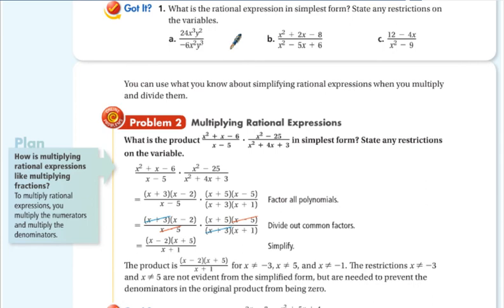Alright. A simplified is negative 4x over y. x can't be 0 and neither can y. For b, it is x plus 4 over x minus 3. And x can't be 2 or 3. And this one is negative 4 over x plus 3. And x cannot be equal to plus or minus 3. If you listed that as x can't be equal to 3 and negative 3, that's the same thing.